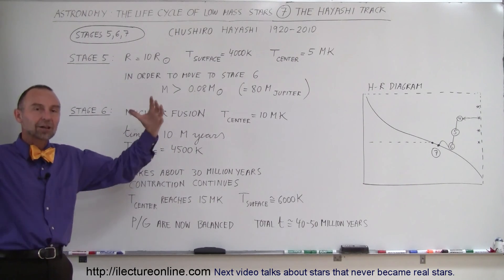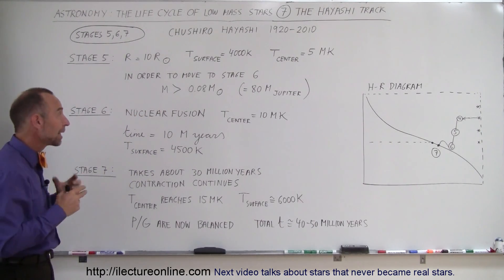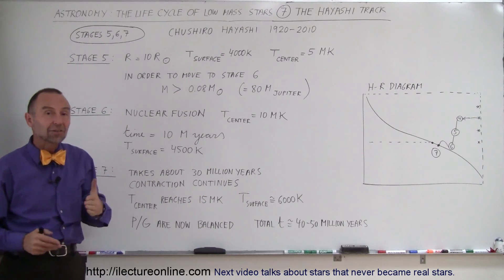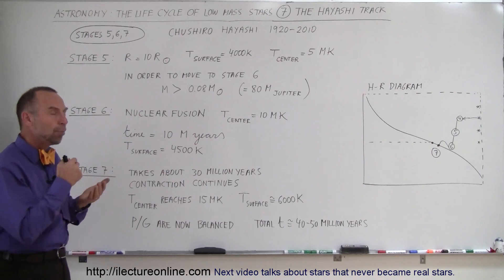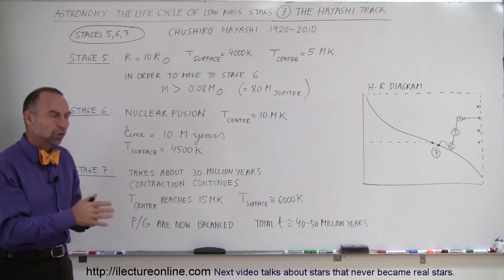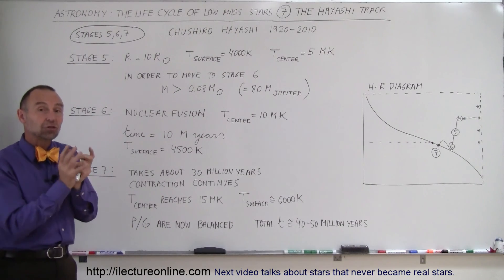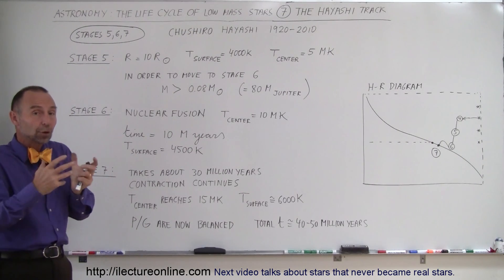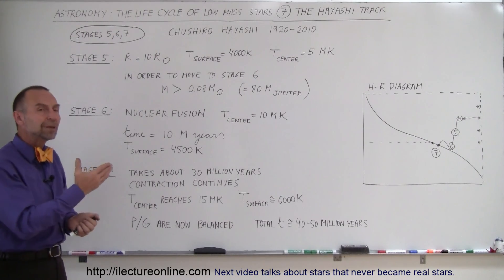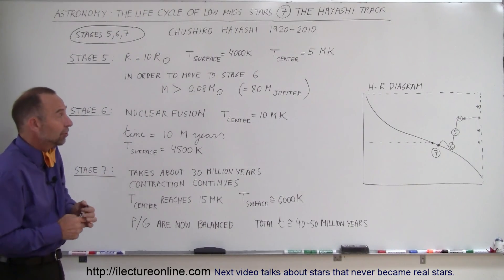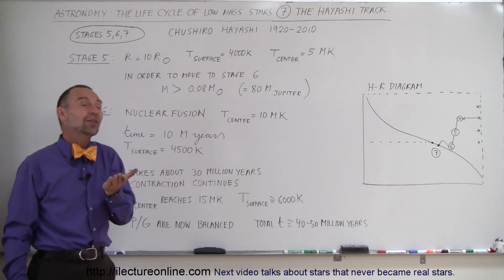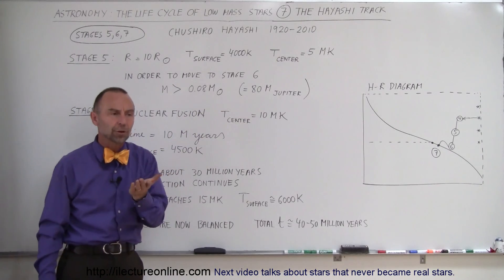Mass is what causes gravity to collapse the star to its size. The minimum mass required to make that happen is about 8% the mass of the Sun — 0.08 times the mass of the Sun is sufficient for a star to start nuclear fusion. There are no stars in the universe smaller than that, because they simply would not have started nuclear fusion. As a comparison, 0.08 times the mass of the Sun is about 80 times the mass of Jupiter.